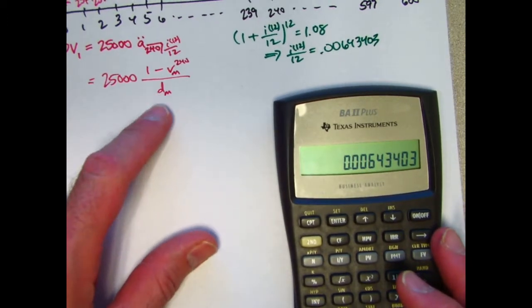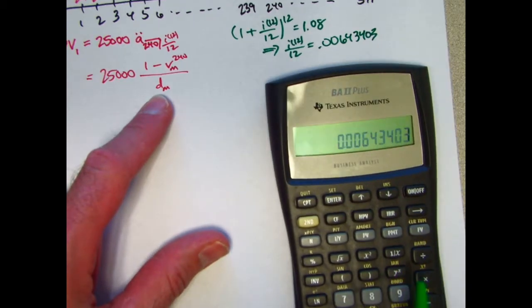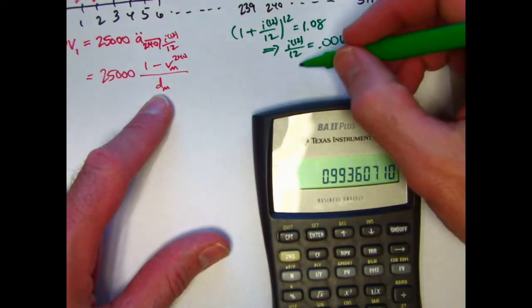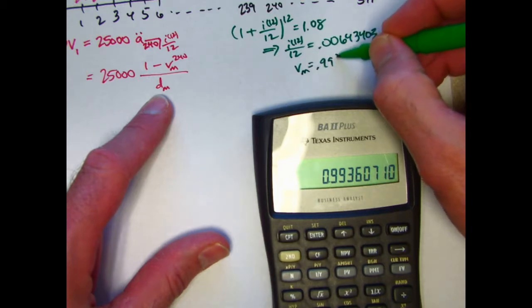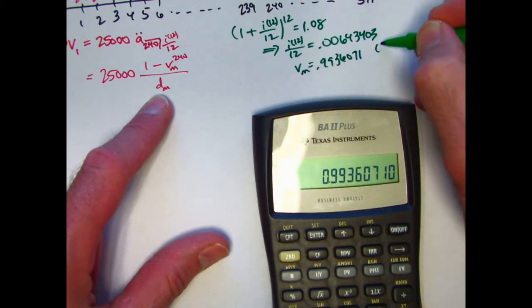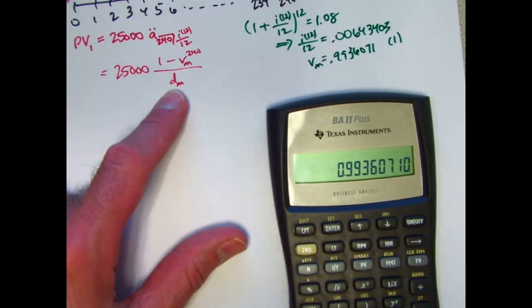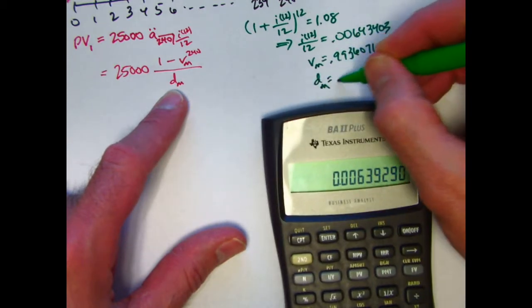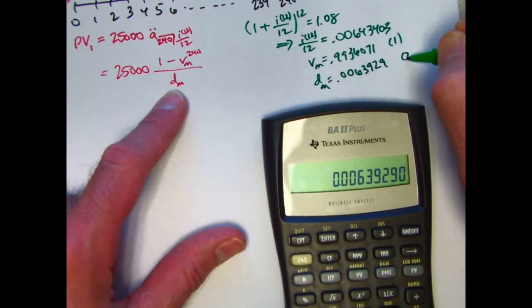Let's find the corresponding V and D. If I add 1 to this, and then take its reciprocal, the monthly V, Vm, is going to be 0.9936071. Let's store that in register 1. And if I subtract that from 1, that's going to be the monthly D. D-sub-M is going to be 0.0063929. I'll store that in register 2.